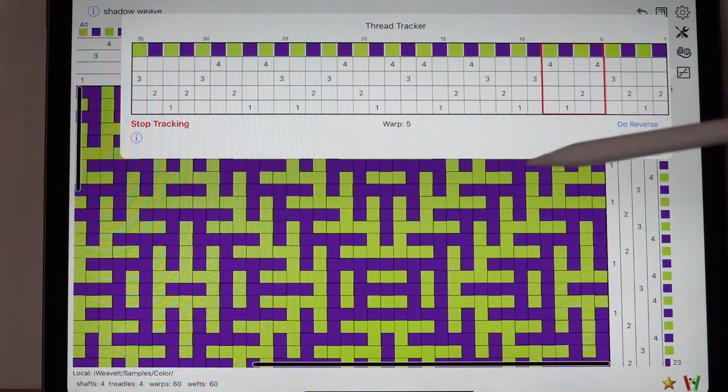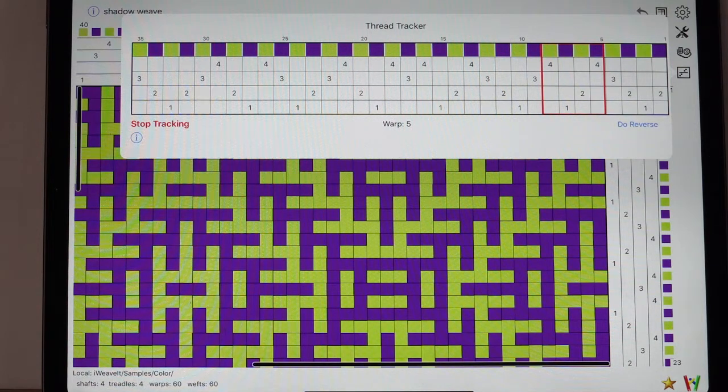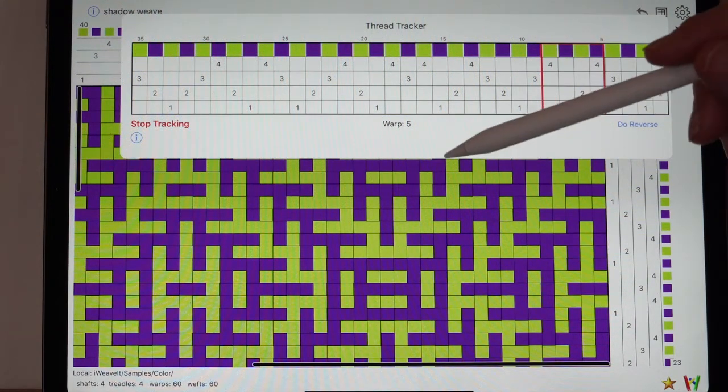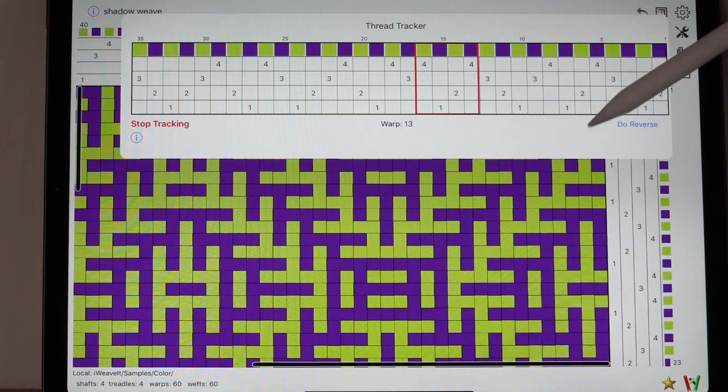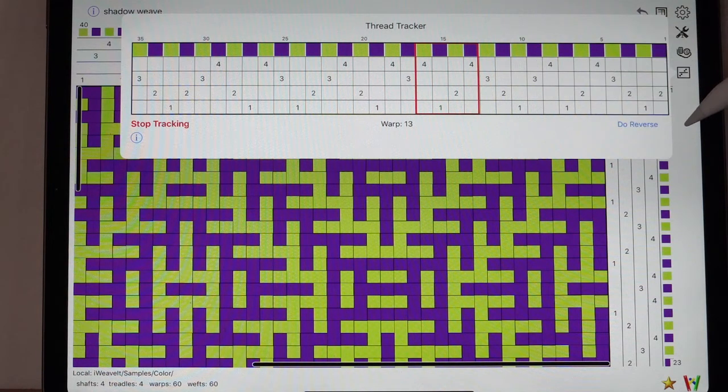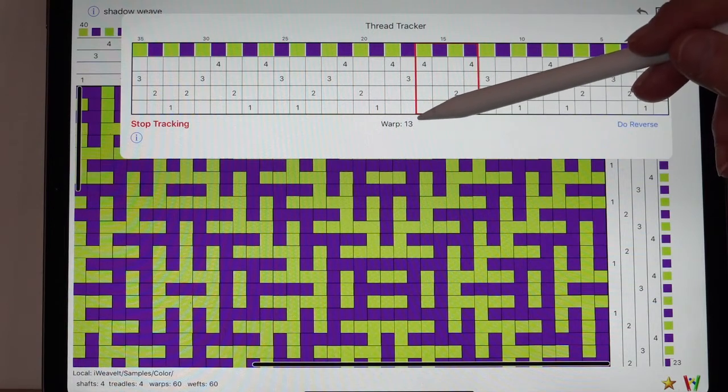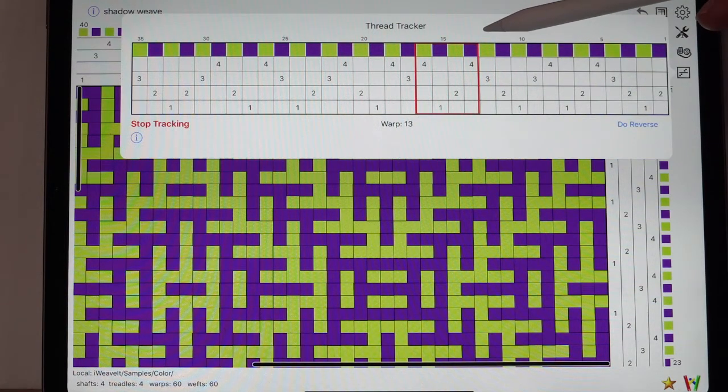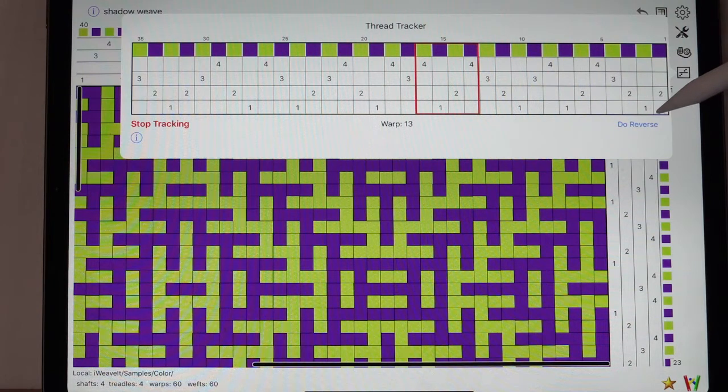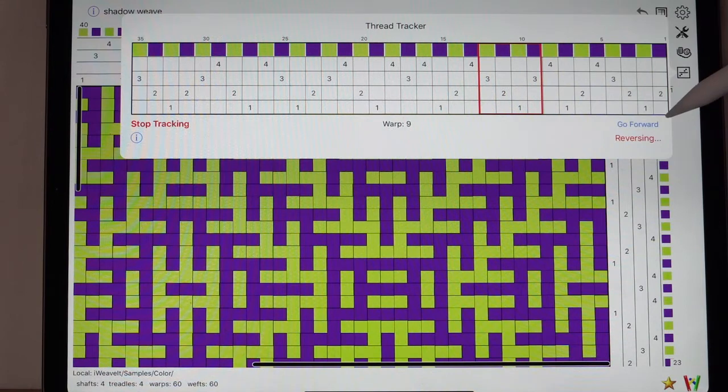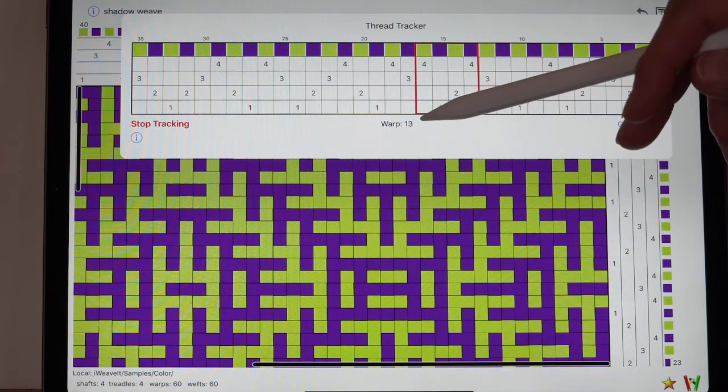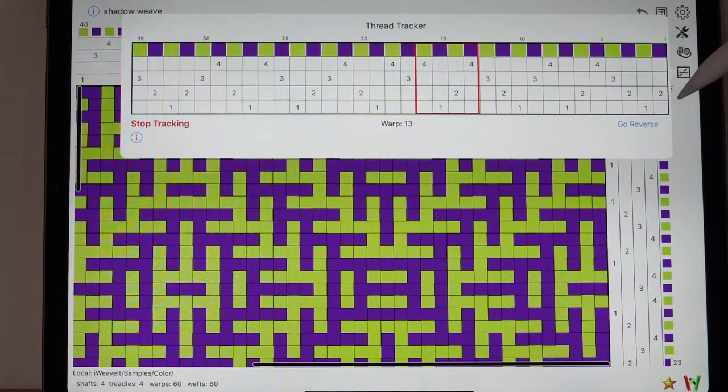You can tap inside or outside. It advances to the next set of threads. Four, two, one, four. When you finish that one, you pick the next one. Oops, I hit it twice. But warp 13 shows you the position that you're at. If we hit it twice, let's do a reverse and we'll hit it back and then we'll go forward again.